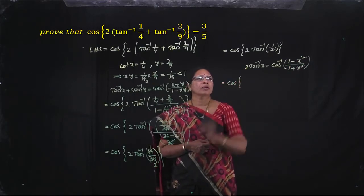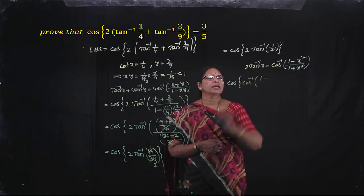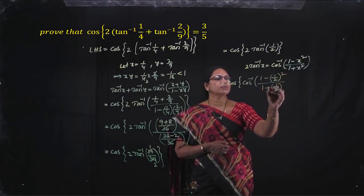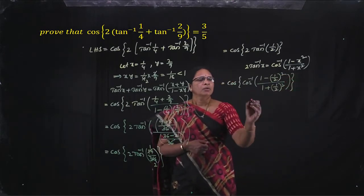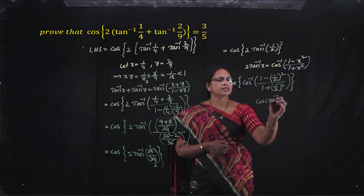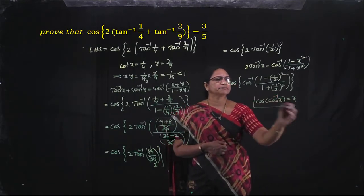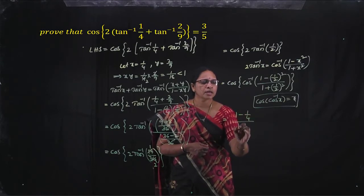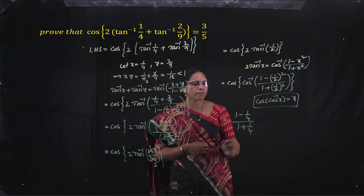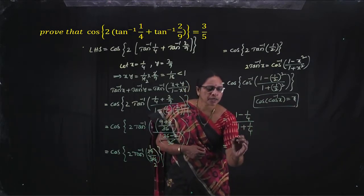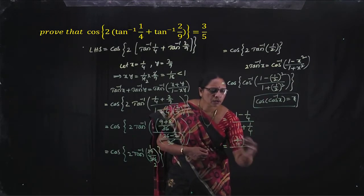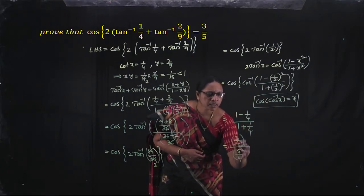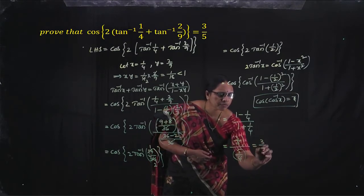Now 2 tan inverse 1 by 2 is in the form of 2 tan inverse x. Using the formula cos inverse of 1 minus x square by 1 plus x square, we get cos of cos inverse of 1 minus 1 by 4 by 1 plus 1 by 4. That is 3 by 4 by 5 by 4, and LCM 4 cancels to give 3 by 5, which is the RHS.